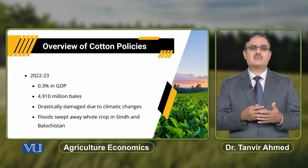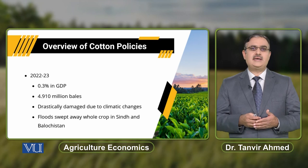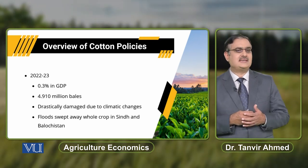Summarizing with reference to fiscal year 2020-2023, cotton contributed about 0.3% of GDP, and production was about 4.910 million bales — approximately 50% less than the previous year's production. This drastic reduction was partly driven by climatic changes; the floods of 2022 swept away whole crops in Sindh and Balochistan.